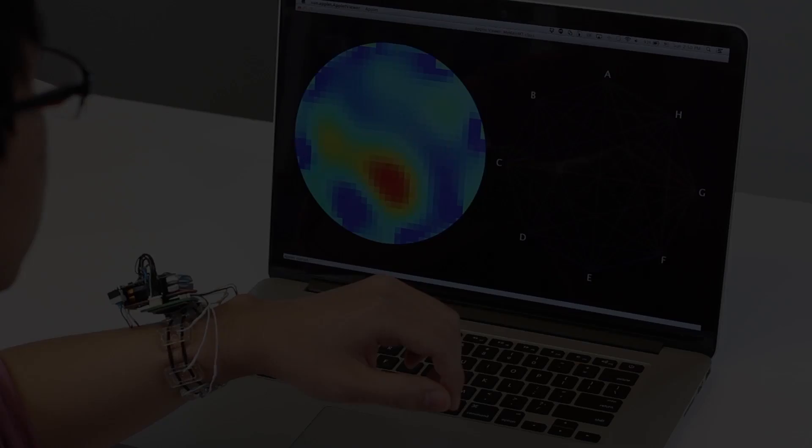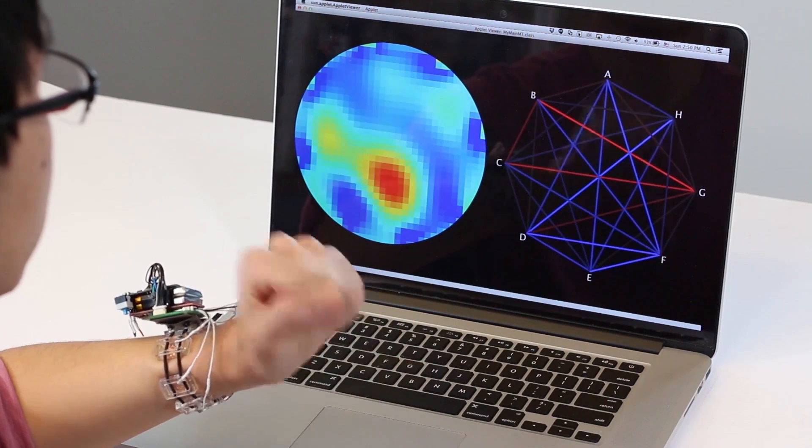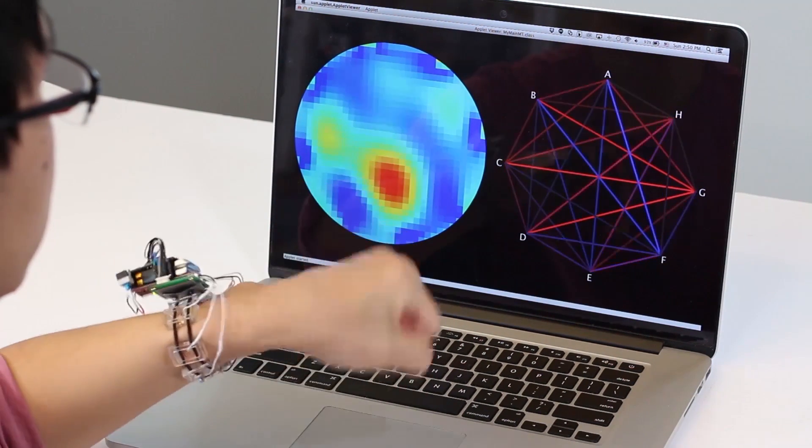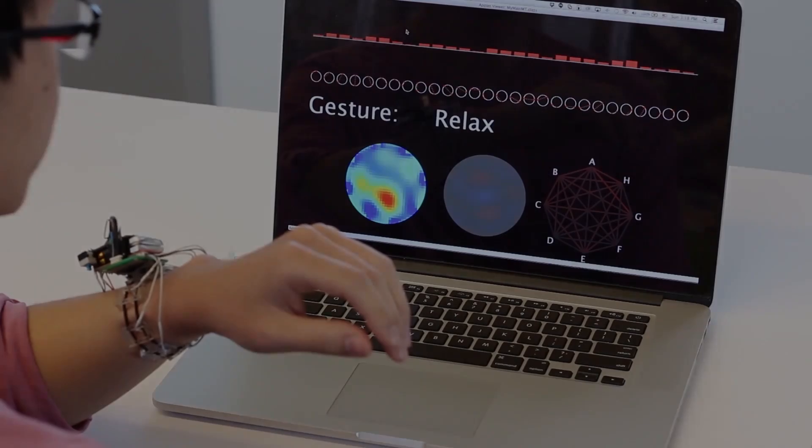This band can be worn on the wrist or arm. Here you can see a user performing different hand poses. Note how the raw pairwise data and the reconstructed image change in response to the muscles flexing.